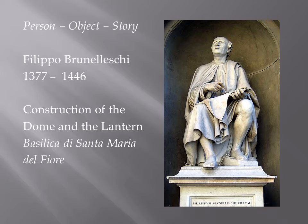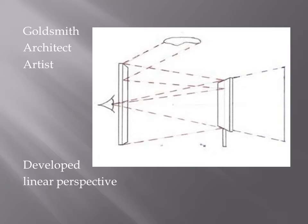A little more about Brunelleschi himself: he was a goldsmith, an architect, and an artist. When people talk about someone being a Renaissance man or Renaissance person, they're referring to multiple talents, disciplines, and abilities. In the Renaissance period, artists and artisans of all types had to acquire a range of abilities in order to make a good living. In addition to architecture, goldsmithing, and visual arts, he is also credited with developing the idea of linear perspective.